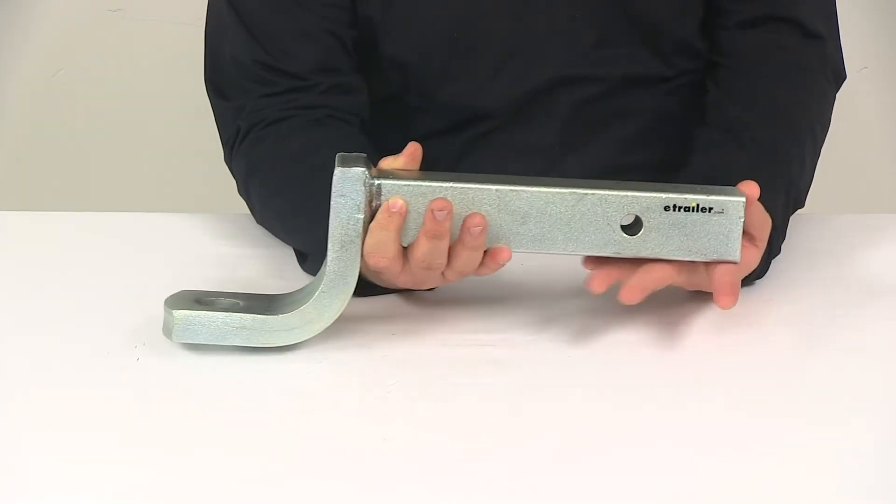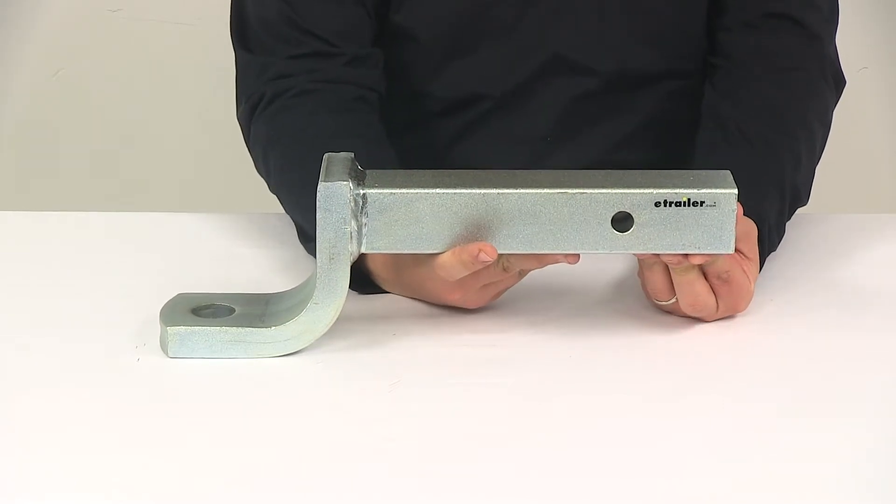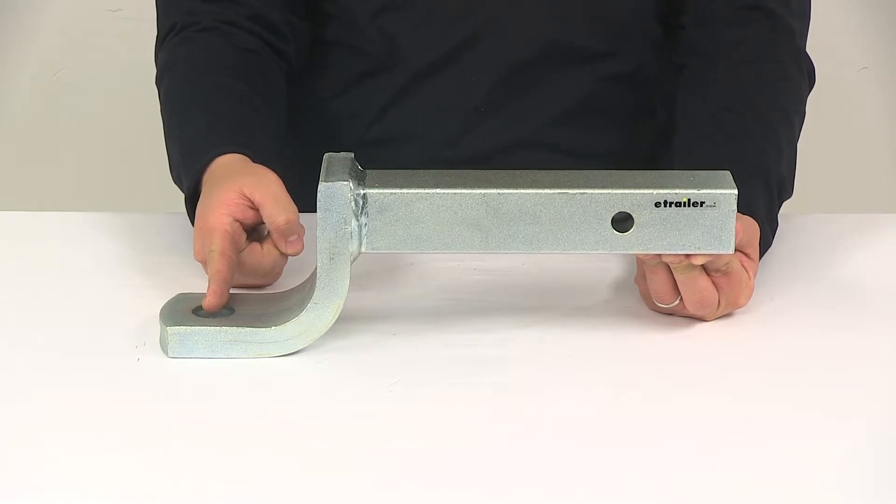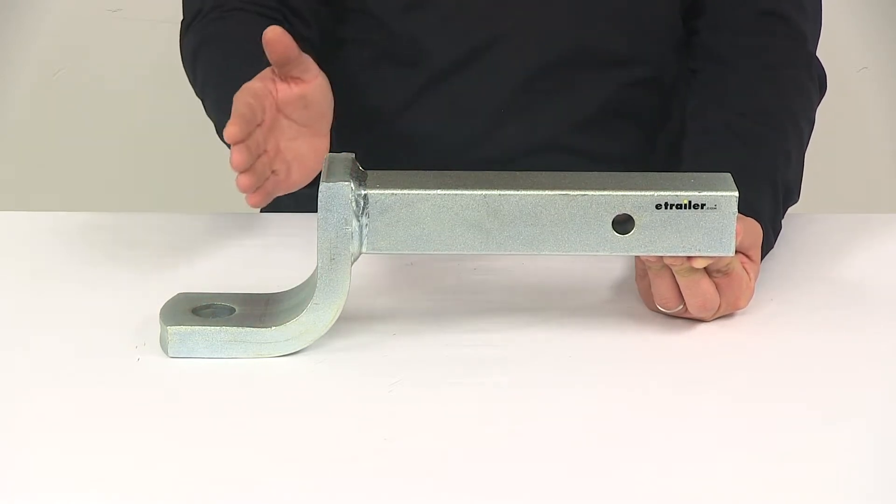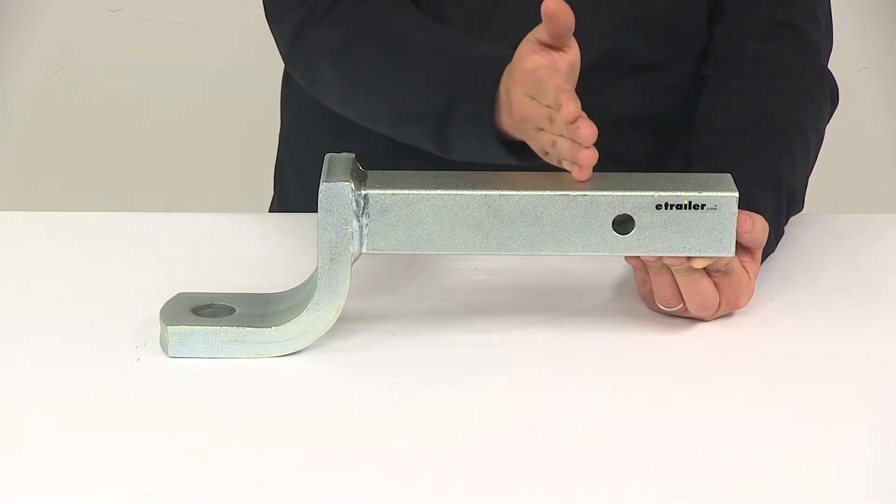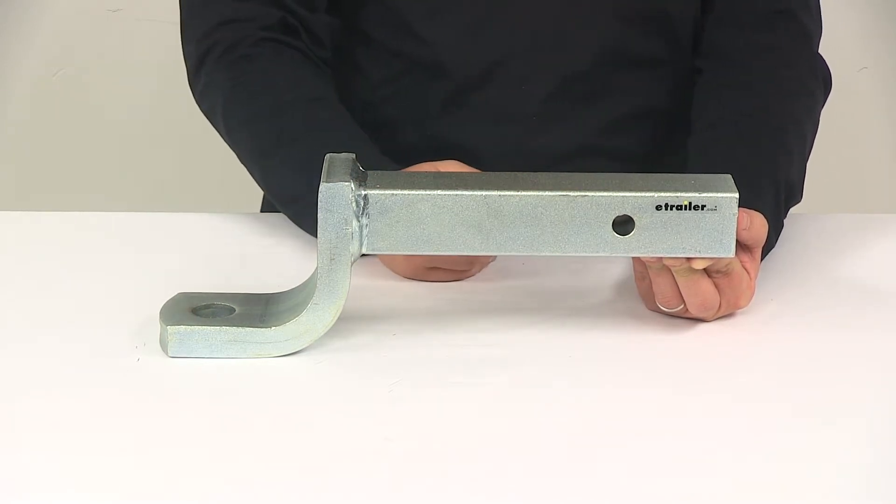I did take a measurement from the center of the hitch pin hole to the center of the hitch ball hole and got a measurement of 12 inches. That is a little bit longer than your standard mount, so it does have that extended shank on it, which is a nice feature to have.